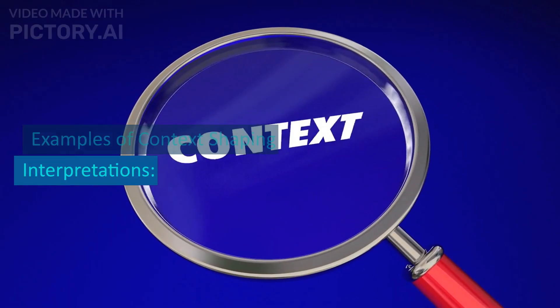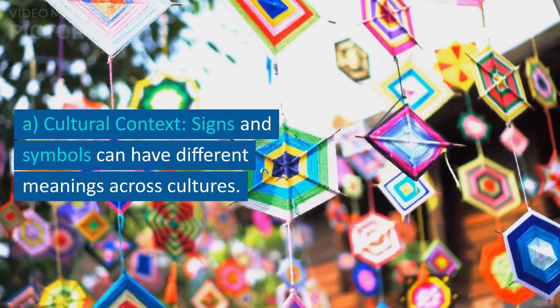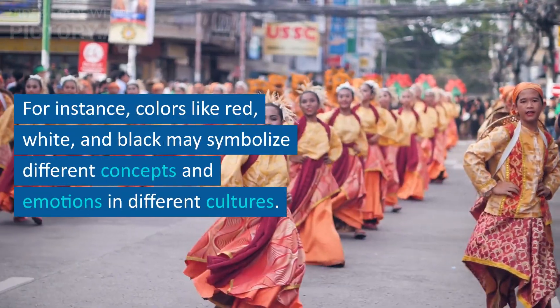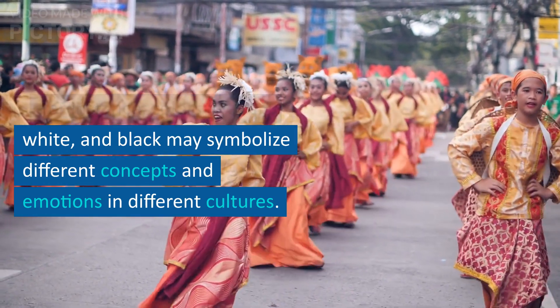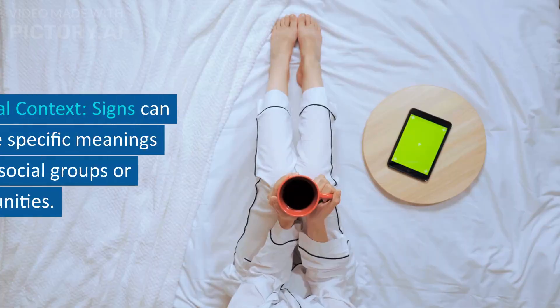Examples of context shaping interpretations. Cultural context: Signs and symbols can have different meanings across cultures. For instance, colors like red, white, and black may symbolize different concepts and emotions in different cultures.